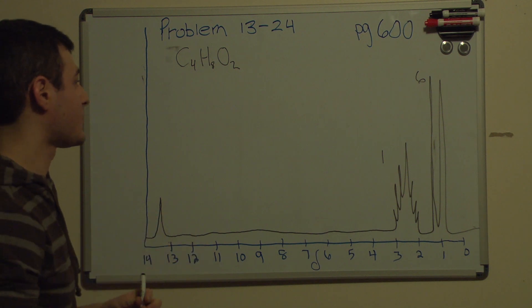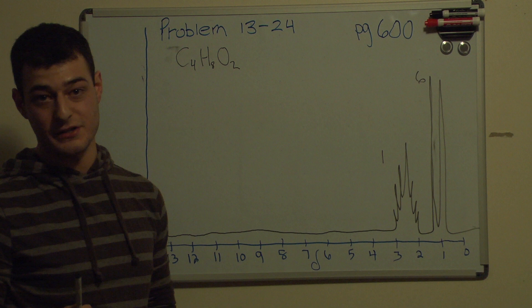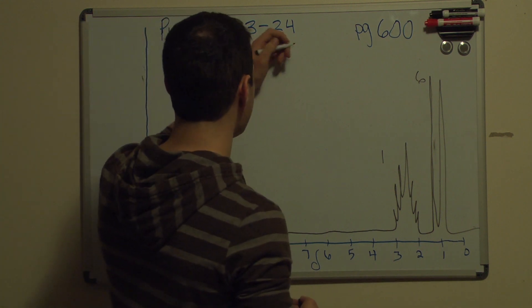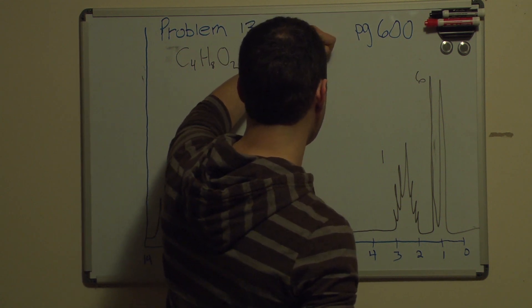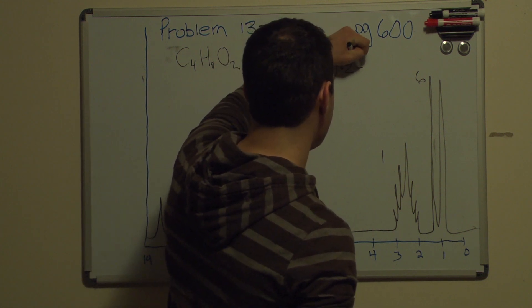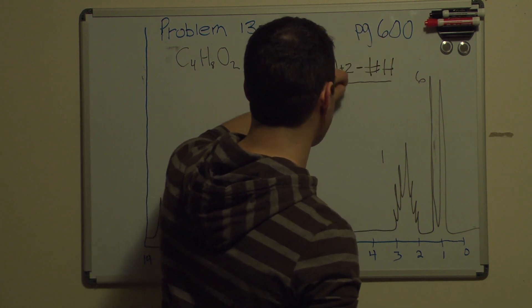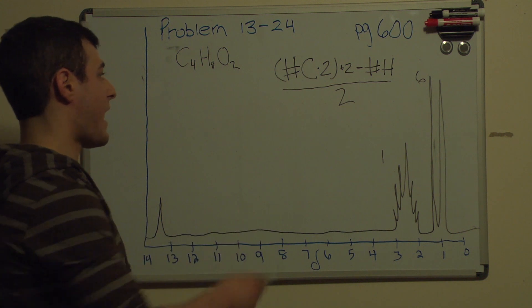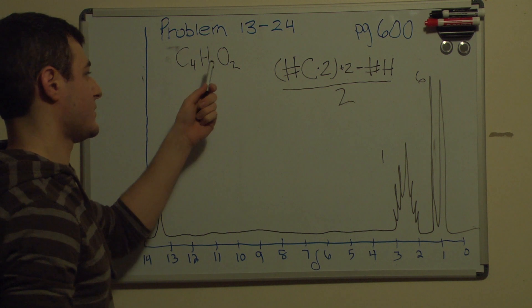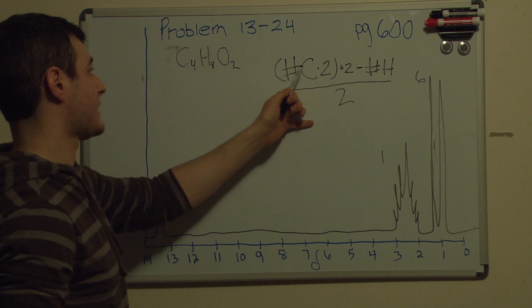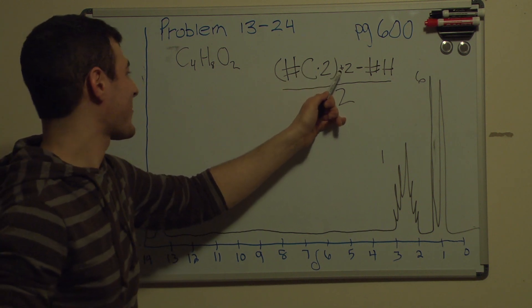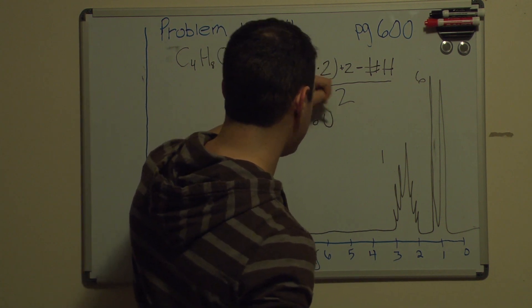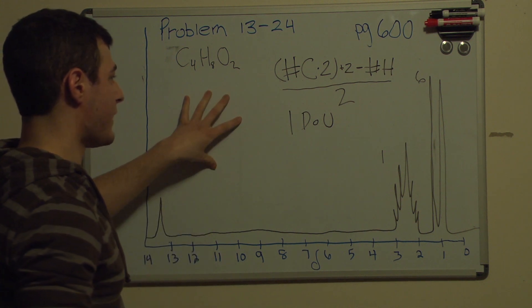The first thing I would do when you're solving any sort of problem like this where they give you the formula is to solve for degrees of unsaturation, because that's going to tell you if there's any double bonds or an aromatic ring or a ring itself. If you don't remember the formula, I'll put it up here. It's your number of carbons times two, you add two to that, you subtract your number of hydrogens, and then you divide it all by two. There's a couple extra rules: nitrogen is worth half a carbon, halogens are worth hydrogens, oxygens don't count. We're going to ignore the oxygen and go through this calculation. Four carbons times two equals eight, plus two equals ten, minus eight equals two, divided by two, and we get one degree of unsaturation.